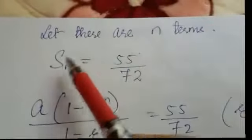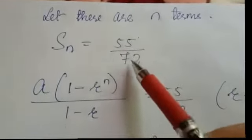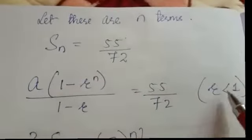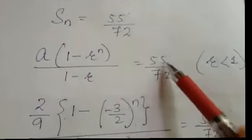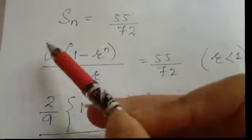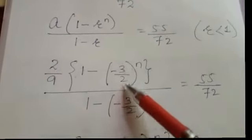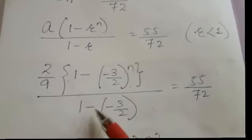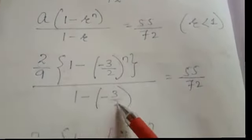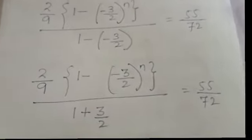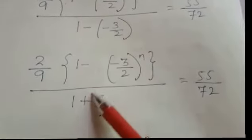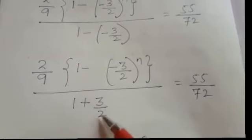Let there be n terms. Sn equals 55 by 72. When the value of r is less than 1, we use this formula: sum equals a times (1 minus r to the power n) divided by (1 minus r) equals 55 by 72. Value of a is 2 by 9, value of r is minus 3 by 2 to the power n, divided by 1 minus r which is minus 3 by 2. Now we solve only the denominator: minus into minus gives plus, so 1 plus 3 by 2.